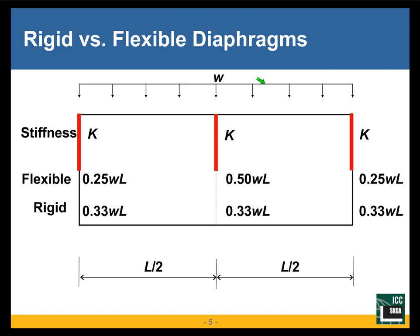If the intensity of this loading is W units per length, the total seismic force would be W times L, L being the length of the diaphragm.